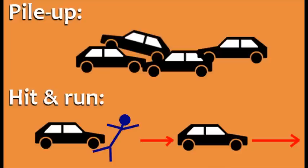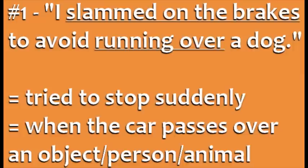Now we'll look at four descriptions of accidents and learn the verbs used for talking about them. Number one: I slammed on the brakes to avoid running over a dog. To slam on the brakes means to try to stop the car very suddenly, often in an emergency. The phrasal verb run over is used when a car passes over an object, animal, or person.